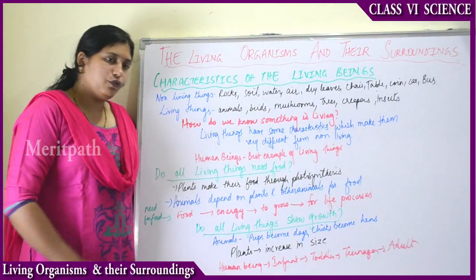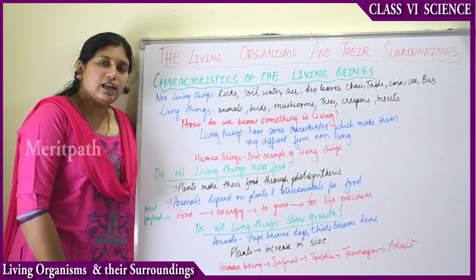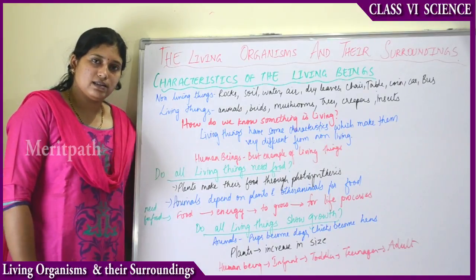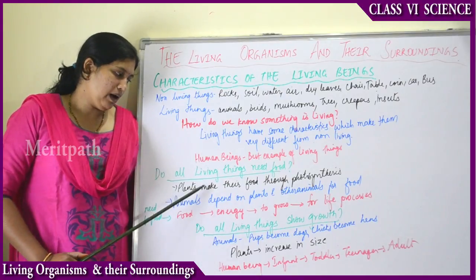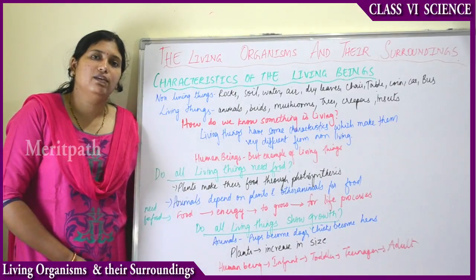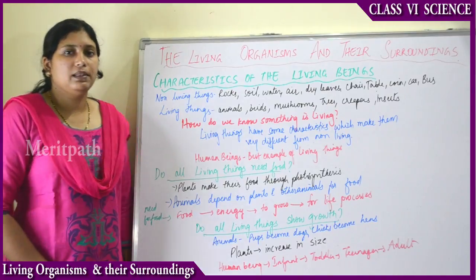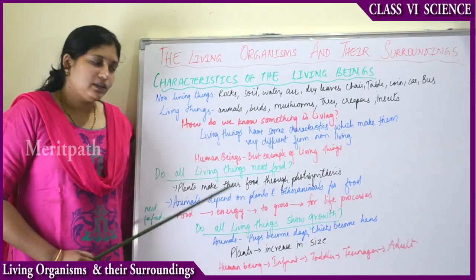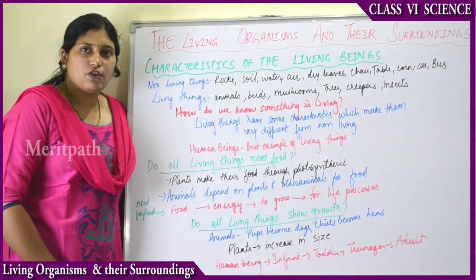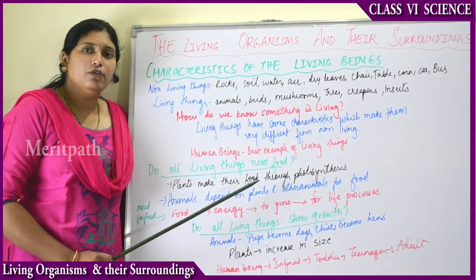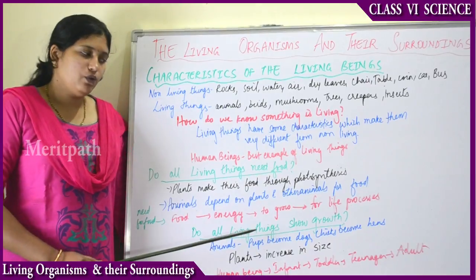Do all living things need food? The main living things — human beings, animals, insects, microorganisms — all need food. Plants make their own food through photosynthetic activity, using sunlight and water during the daytime, and store it in their leaves. Animals depend on plants or other animals for food. For human beings, food is necessary to perform all day-to-day activities.